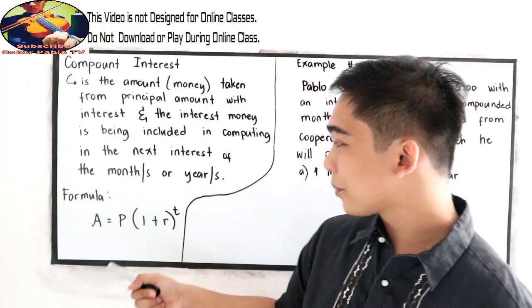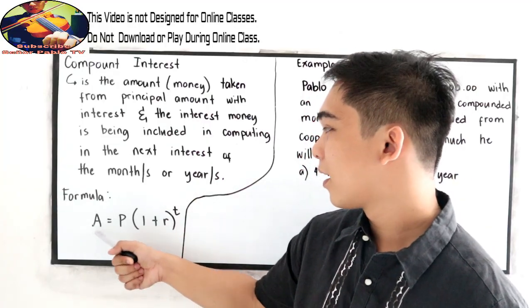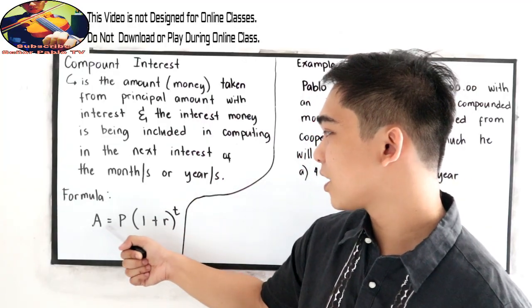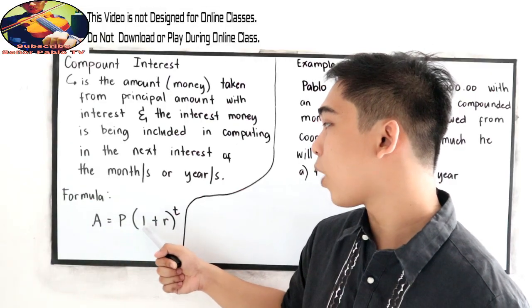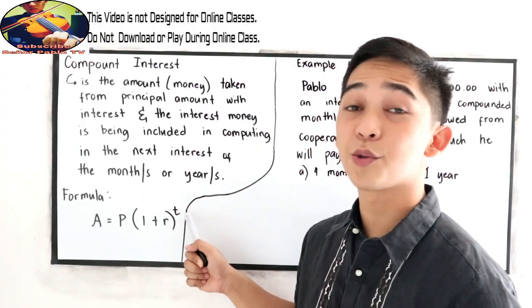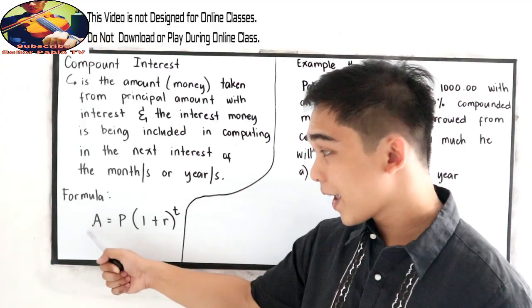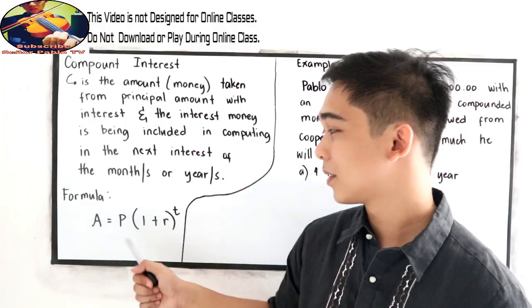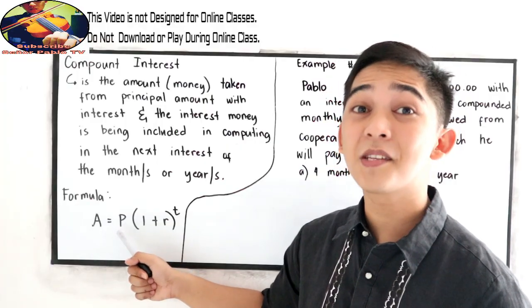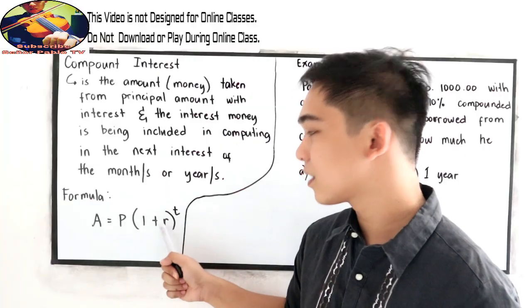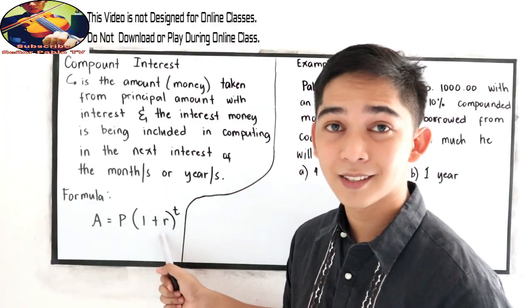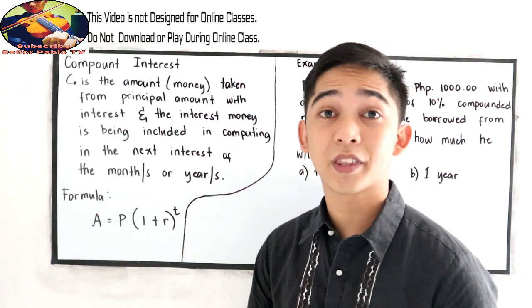So we have the formula A is equal to P, quantity 1 plus R raised to T, where A is the amount value, P is the principal amount, quantity 1 plus R is our rate, and T is our time.